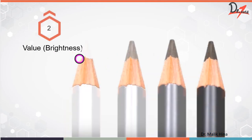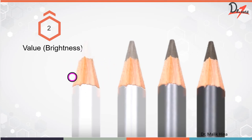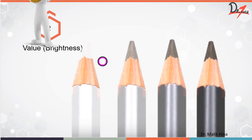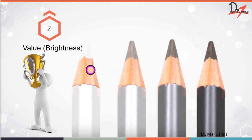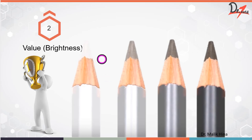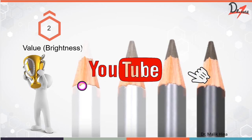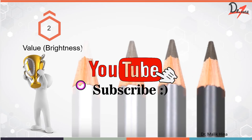Value describes the lightness or darkness of an object. The whiter it is, the higher the value; the darker it is, the lower the value. This can be thought of as a bright student in class having more value. Similarly, if a color is more bright, it has more value. And if you want to be a bright student, don't forget to subscribe to this channel and give a thumbs up!